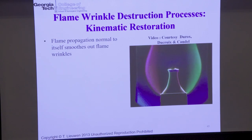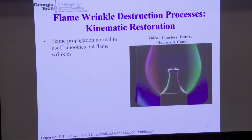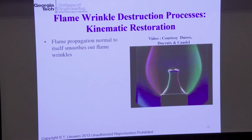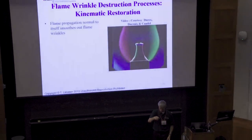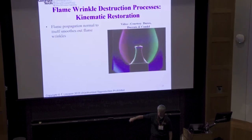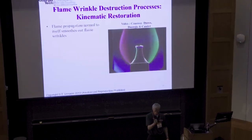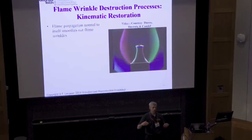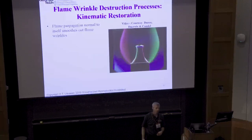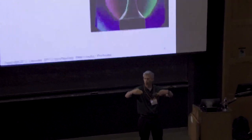Sometimes we call this kinematic restoration — Norbert Peters described this work. Kinematic restoration describes the fact that if you have a surface propagating normal to itself, it doesn't like to be wrinkled; it will always smooth itself back out. Just for fun, go draw an interface however you want, draw arrows normal to it, propagate those arrows, and watch. No matter how complicated a curve, you'll end up with a flat line if you just keep propagating it forward.